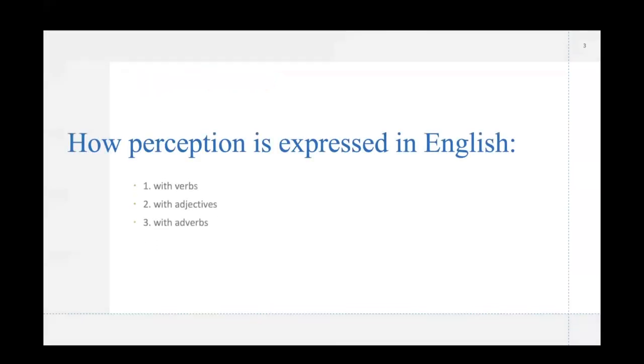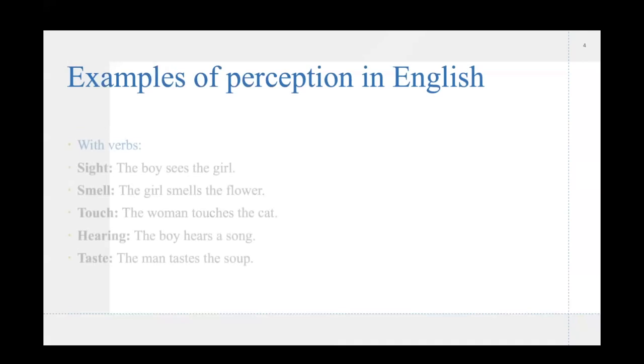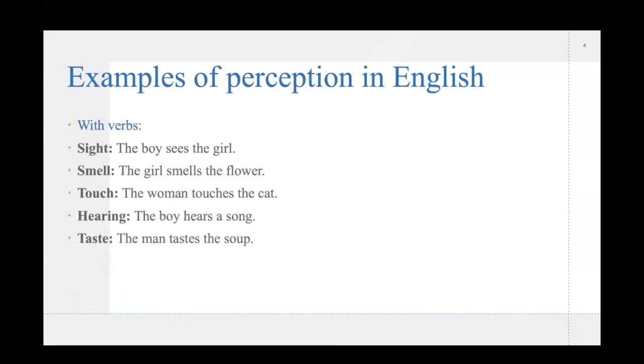So, first of all, we have how perception is expressed in English. We have sentences that will be with verbs, with adjectives, or adverbs. The first example I will give will be with verbs. So, we have for sight, the boy sees the girl. This is expressed through the literal verb to see. Smell is also expressed through the verb to smell, so the girl smells the flower. Touch is the same, the woman touches the cat. Hearing, the boy hears a song, and taste, the man tastes the soup.